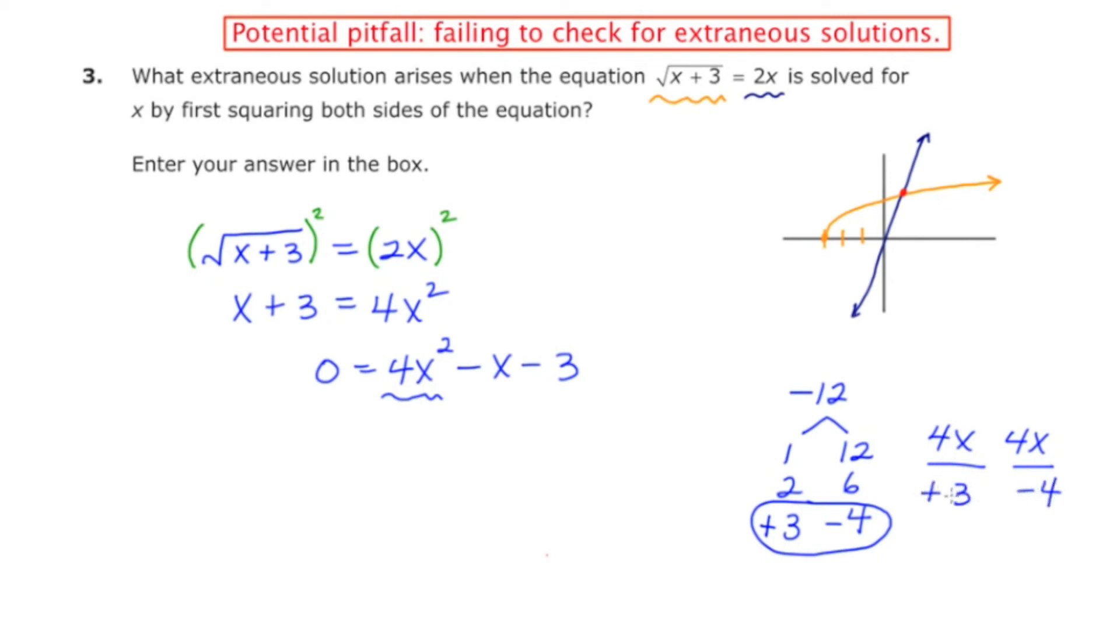And when I read these fractions downward, those turn into my factors. But I have to reduce if possible. So 4 over 3 cannot be reduced, so I'm just going to rewrite this as 4x + 3. Now this fraction, 4 over -4 can be reduced. They can reduce by 4. So instead of writing 4x - 4, I'm going to write x - 1.